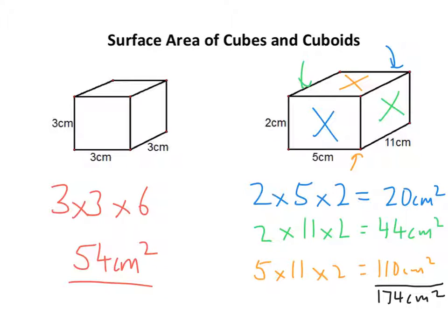So, cubes, nice and easy, just work out one side, times it by six. Cuboid, just remember you've got pairs. So, you've got three pairs. So work them all out separately, add them up at the end.